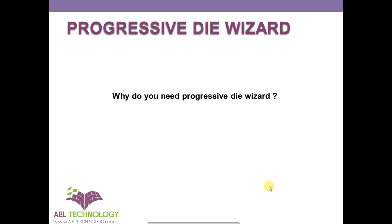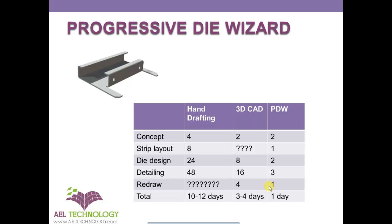I'll take you through a comparison of total time taken over a period of time. This example shows the time taken for an average design engineer to hand draw a particular die, then what happens when years passed and the same designer started using a 3D CAD model without a Progressive Die Wizard, and finally when he started using Progressive Die Wizard. This component is used to explain how long it will take for a designer across 3 different eras.